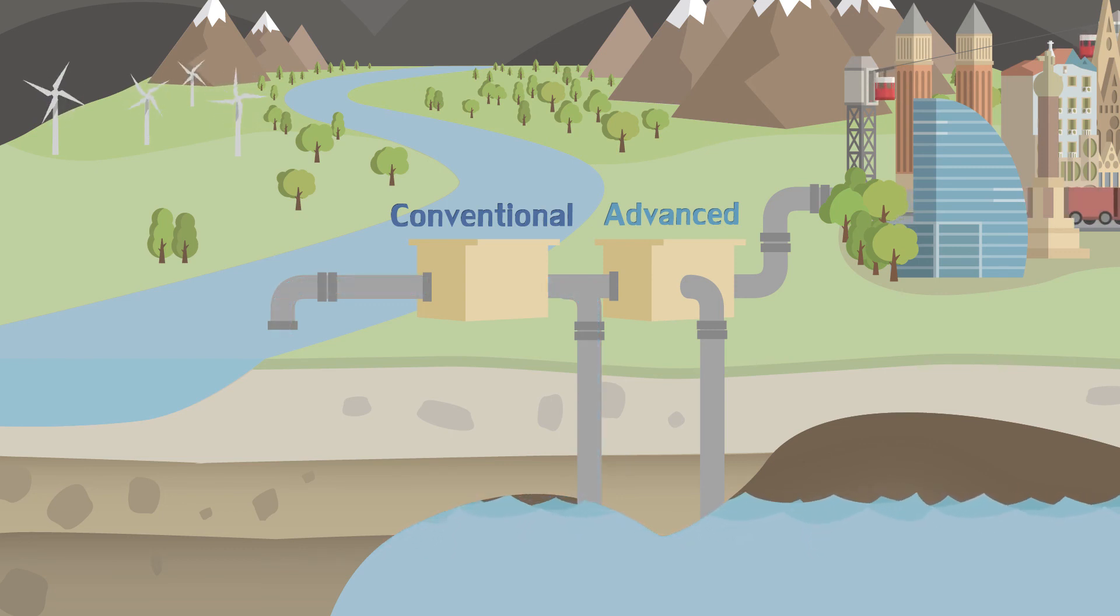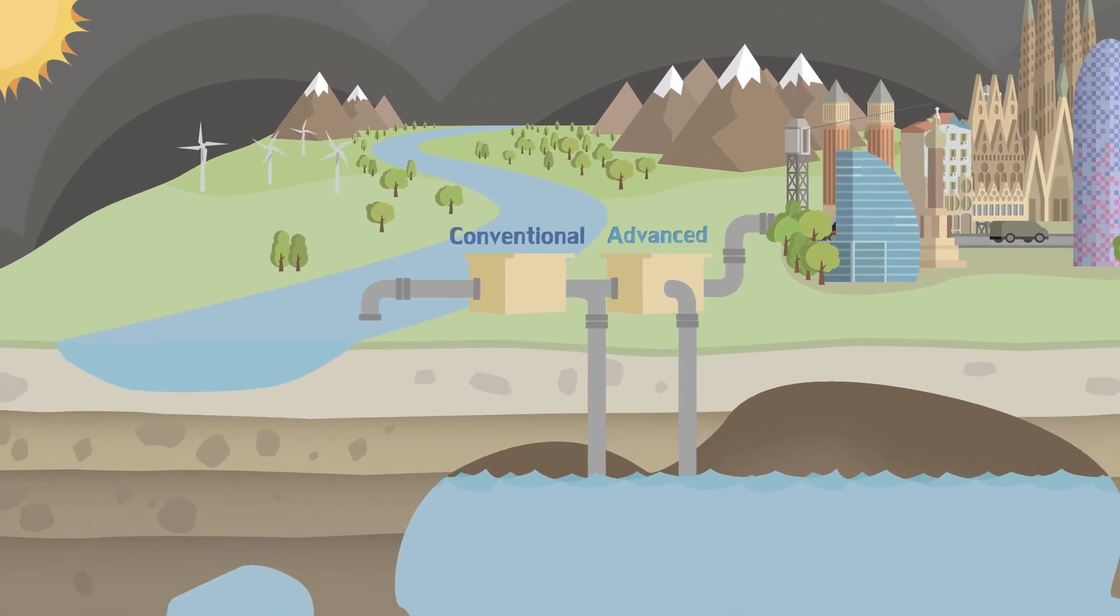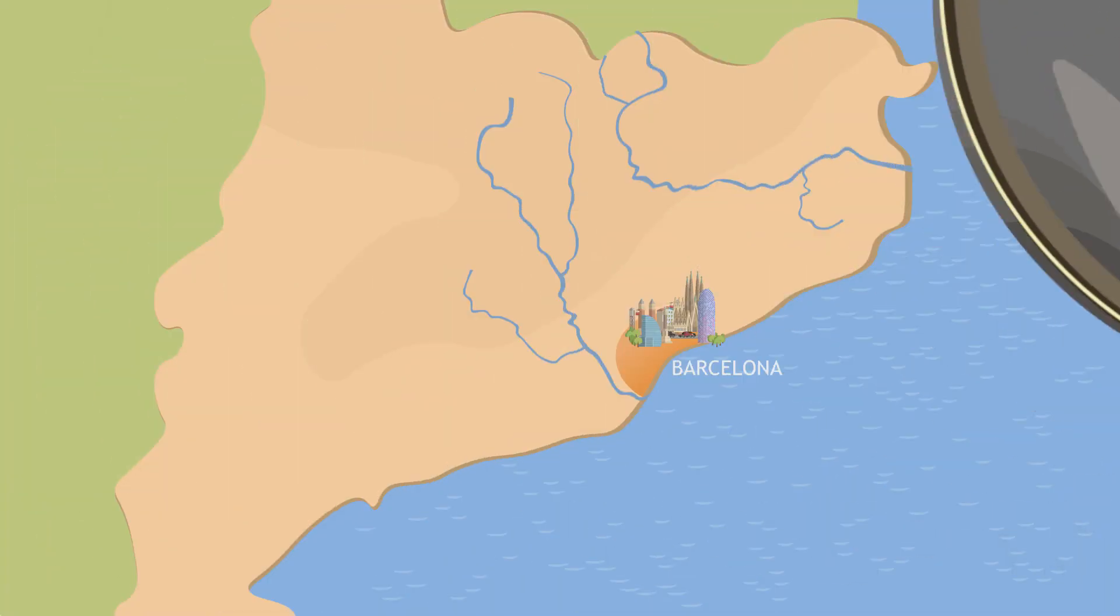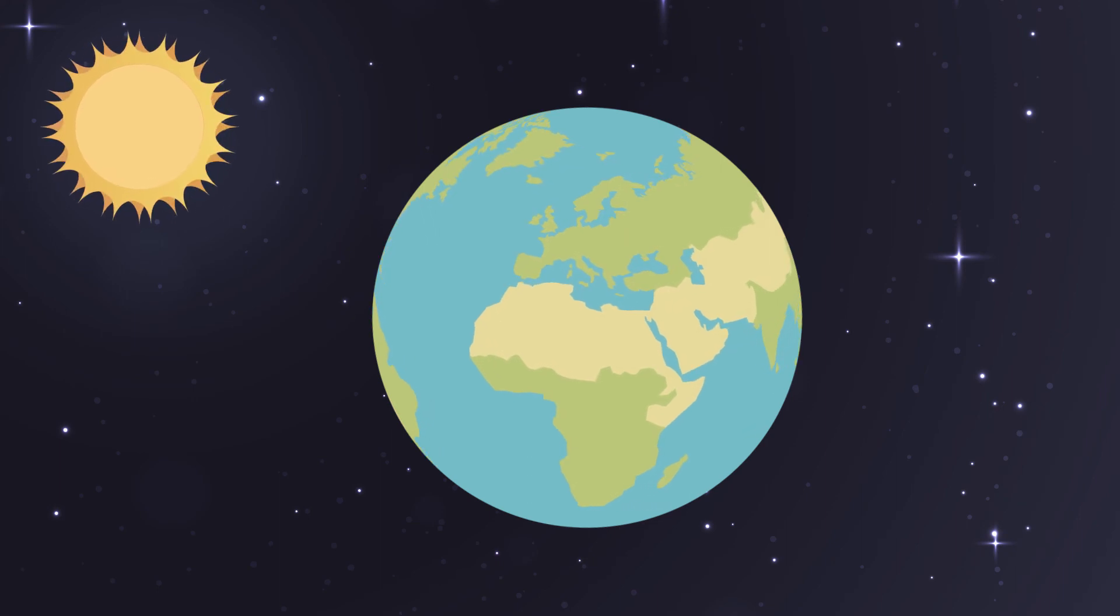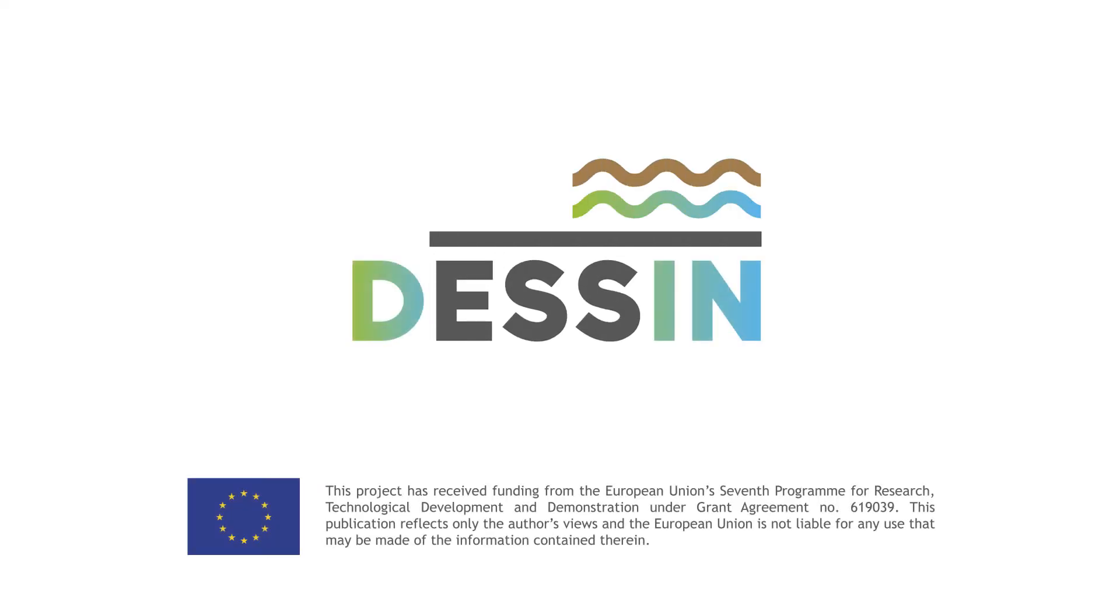The solution developed in the Baix Llobregat aquifer within the European DESSIN project has demonstrated the benefits of direct artificial recharge of aquifers with pre-potable water. This solution brings us closer to our main objective: a more sustainable management of water resources to cope with water scarcity on our planet.